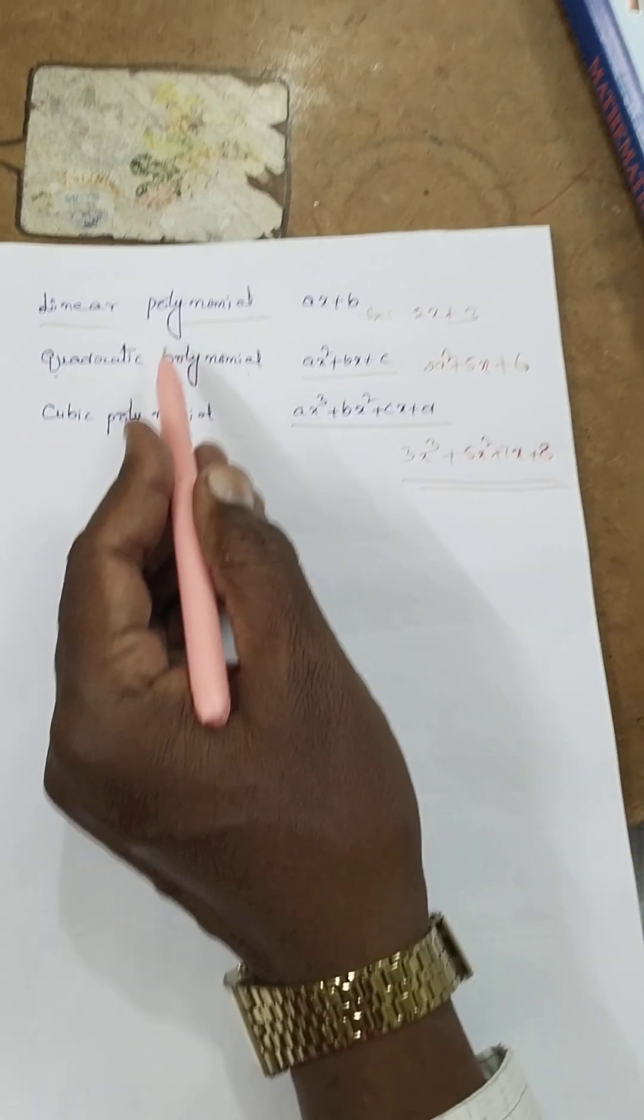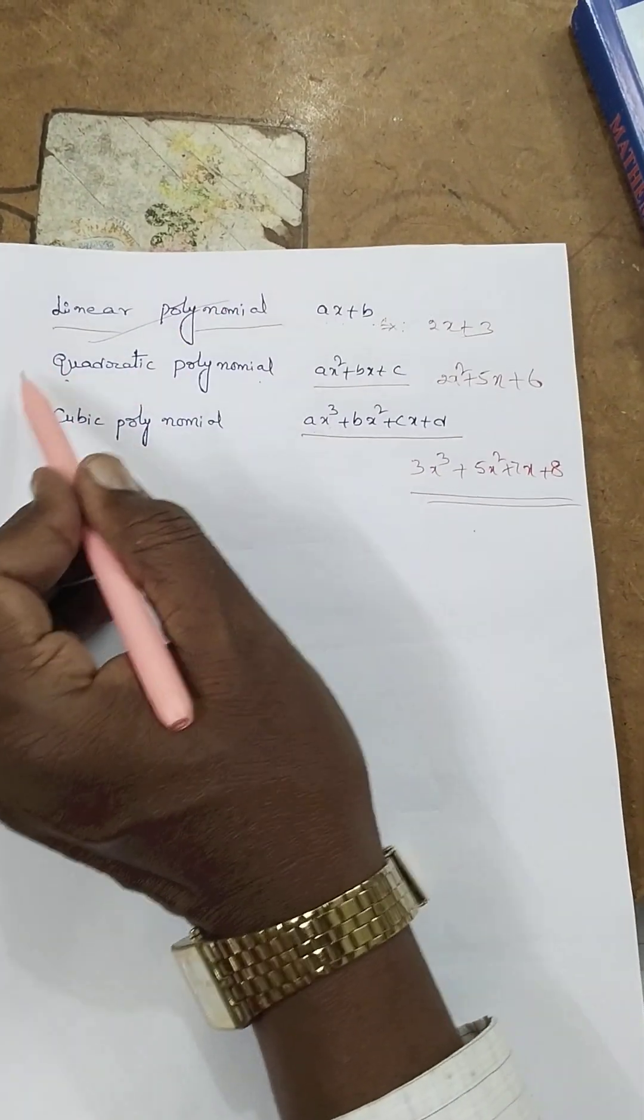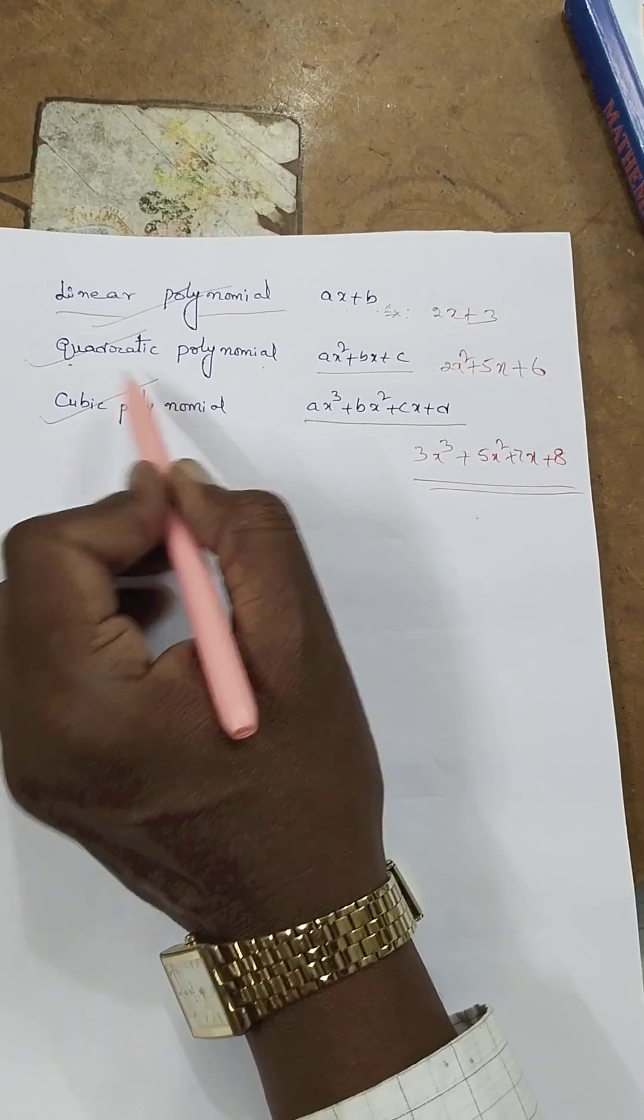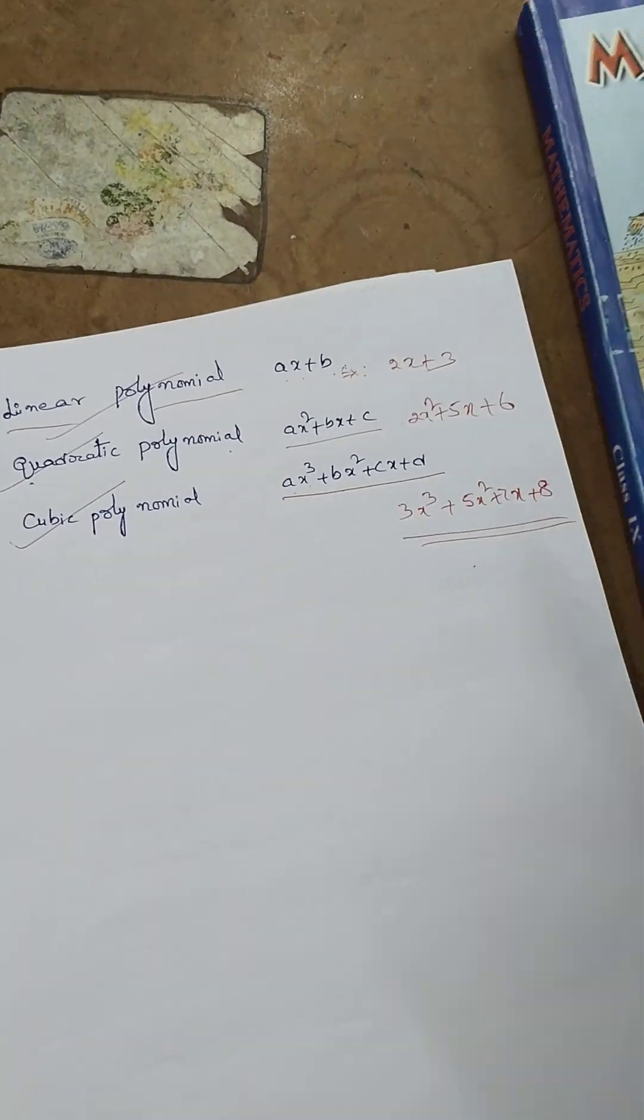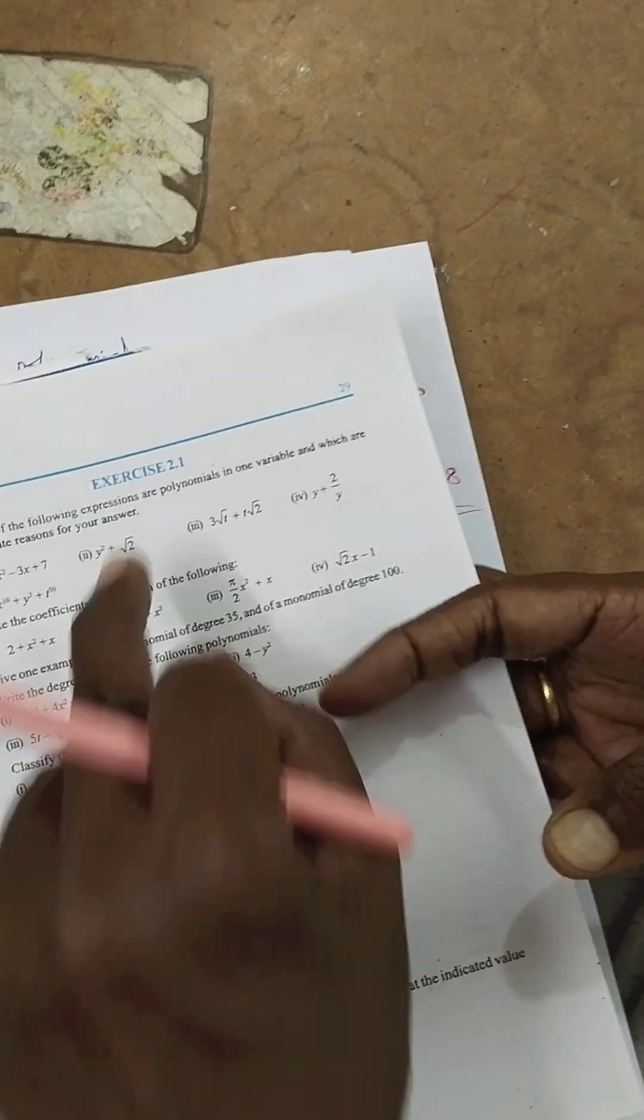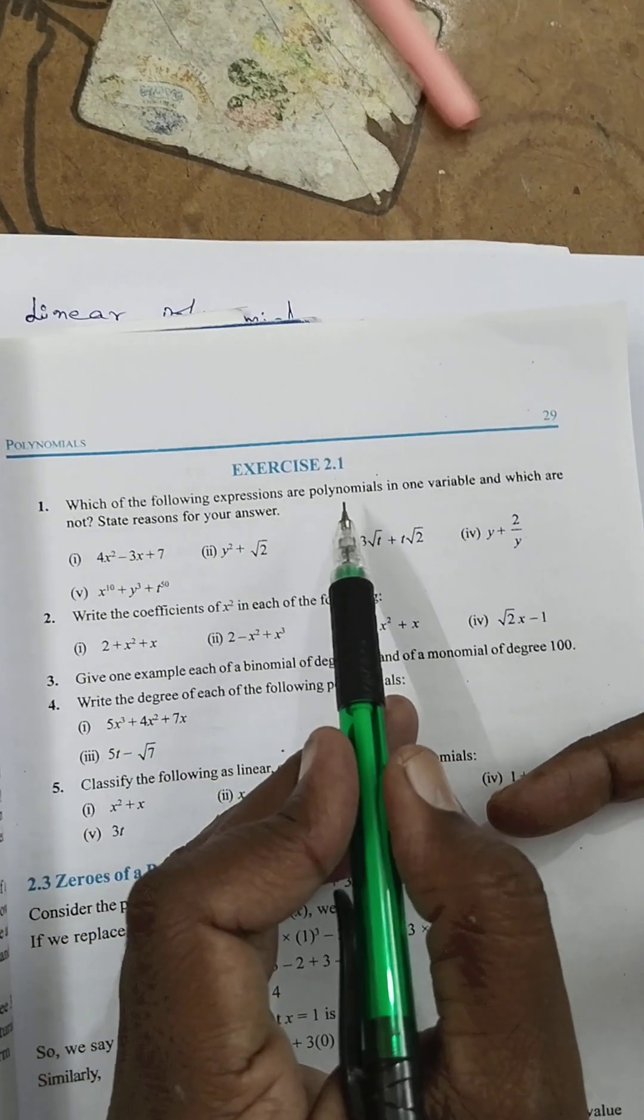So these are the polynomial examples: linear polynomial, quadratic polynomial, cubic polynomial. I am going to discuss the exercise 2.1.